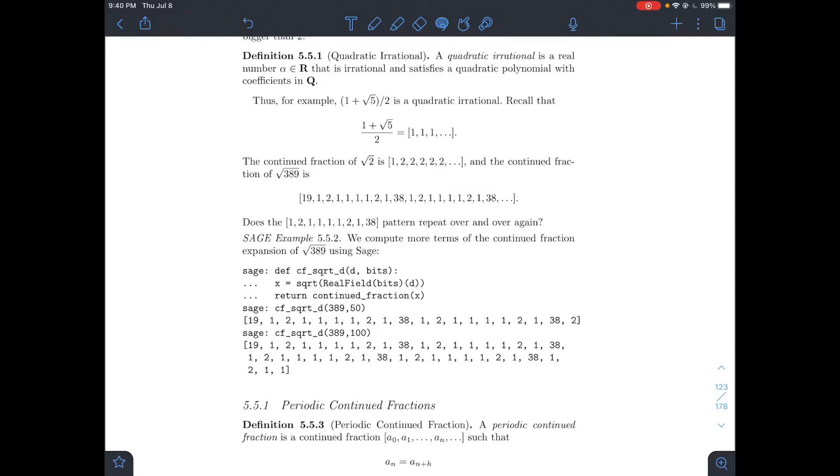This video is about section 5.5 in Stein's elementary number theory book on quadratic irrationals. We're looking at definition 5.5.1 about what is a quadratic irrational, which is a real number that satisfies a quadratic polynomial with coefficients that are rational numbers.